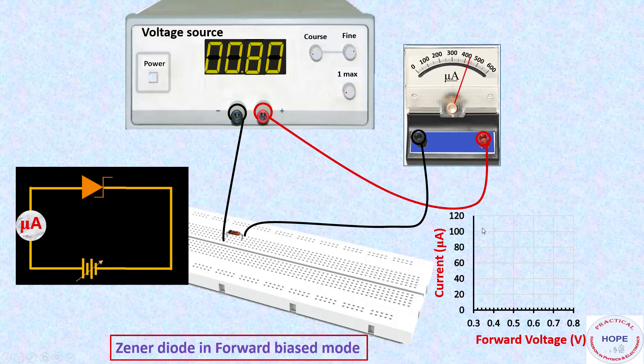We can plot this. So this is the curve. We can make a tangent to this curve like this to determine the value of knee voltage. It's about 0.7 volts.